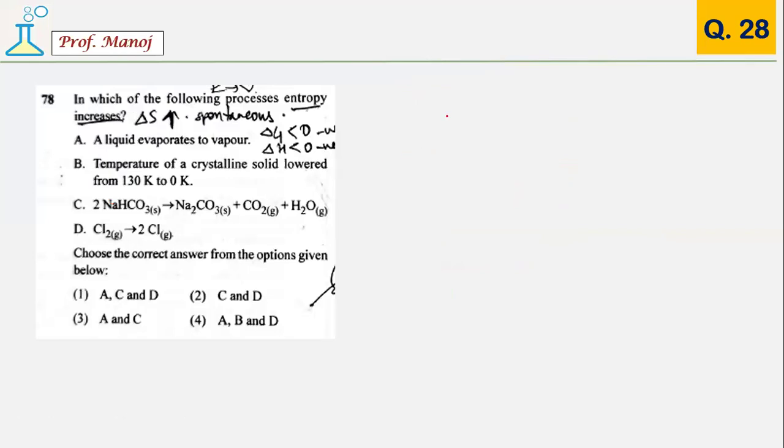The process in which entropy is getting increased. You can check each one. Liquid to vapor: yes, entropy increases. Temperature of solid goes from 130 Kelvin to 0 Kelvin: no, entropy decreases. 2 mol of solid converted into gas: solid to gas, definitely entropy increases. 1 mol particles of gas converted into 2 mol particles: yes, entropy increases. The answer will be A, C, and D.